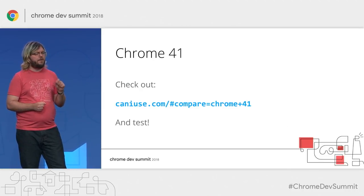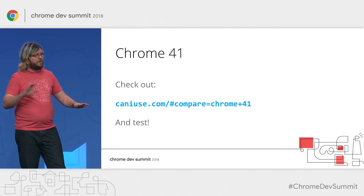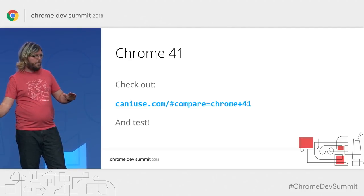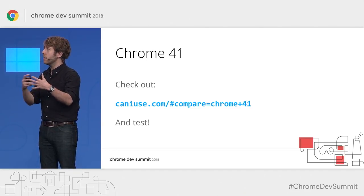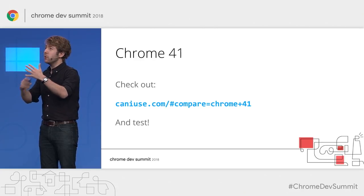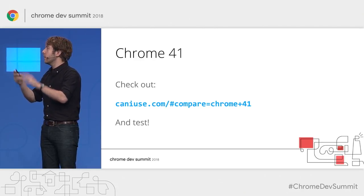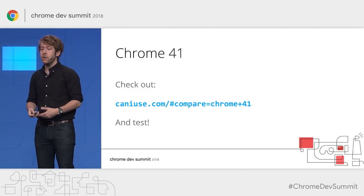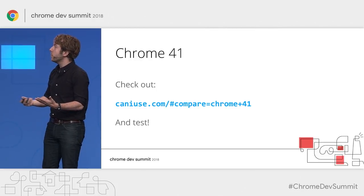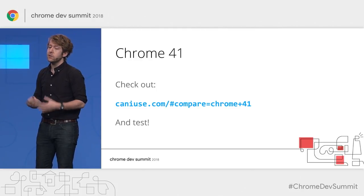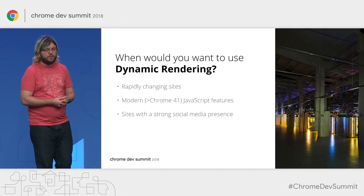MARTIN SPLITT: Is there any place where I can figure out more about these feature issues — where features are missing in Chrome 41 that are in modern browsers? TOM GREENAWAY: If you check out caniuse.com, it's a great resource because you can check features across various browsers and specify specific browser versions as well. So you can say, what's different in Chrome 41 specifically? And the golden rule of indexability and building a website for search crawlers is to just make sure you test really frequently — test, test, test.